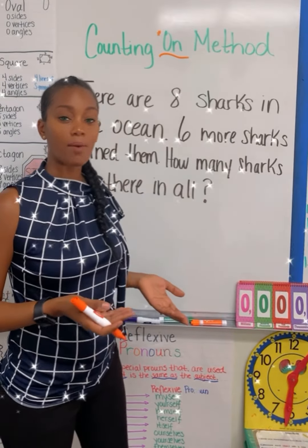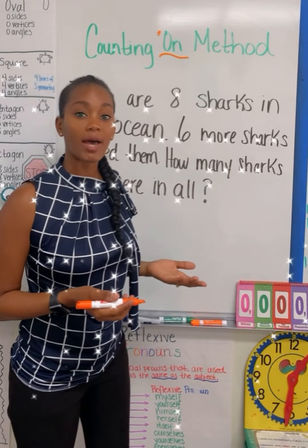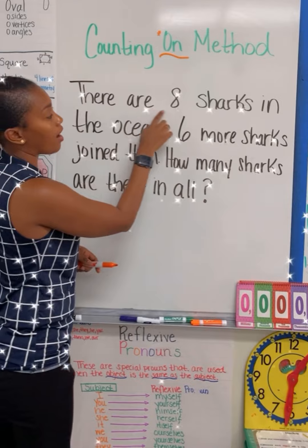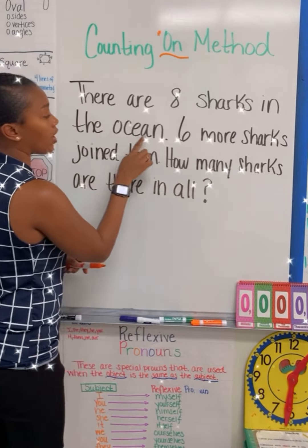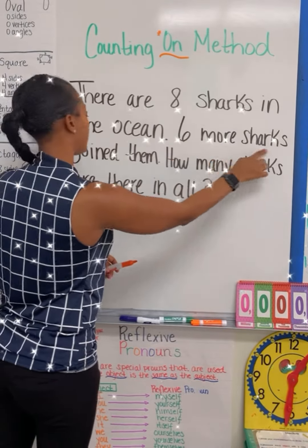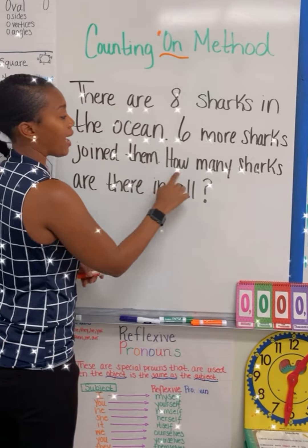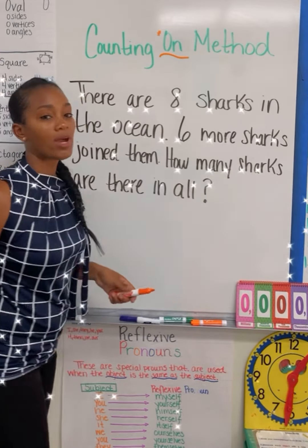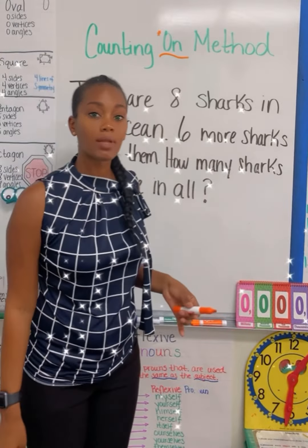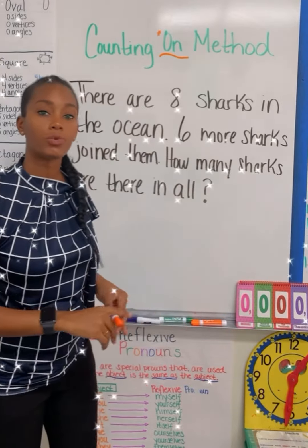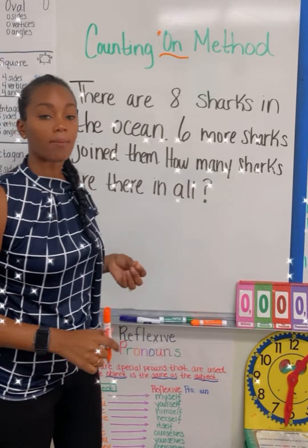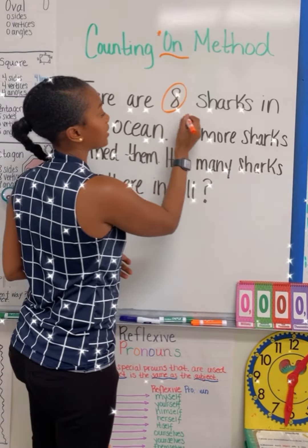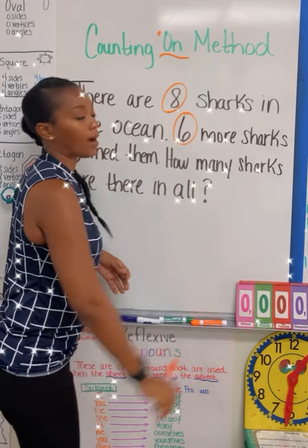Let's try another example, but this time let's try a word problem. Read with me: There are 8 sharks in the ocean. 6 more sharks join them. How many sharks are there in all? When we are looking at a word problem, the first thing we want to do is circle the numbers we are working with. We are working with number 8, and we are working with number 6.